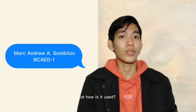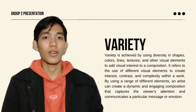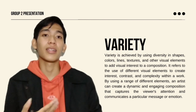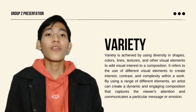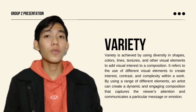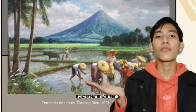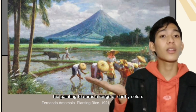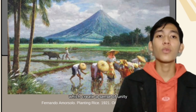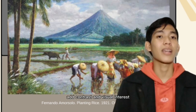Variety refers to the use of different elements or forms in an artwork to create interest, contrast, and visual complexity. This can include variations in color, texture, shape, size, and other visual elements. It is used to prevent an artwork from being monotonous or repetitive. One example is Planting Rice by Fernando Amorsolo, which features a range of earthy colors including shades of green, brown, and yellow, creating unity and harmony, while the bright blue sky and colorful clothing of the farmers add contrast and visual interest.